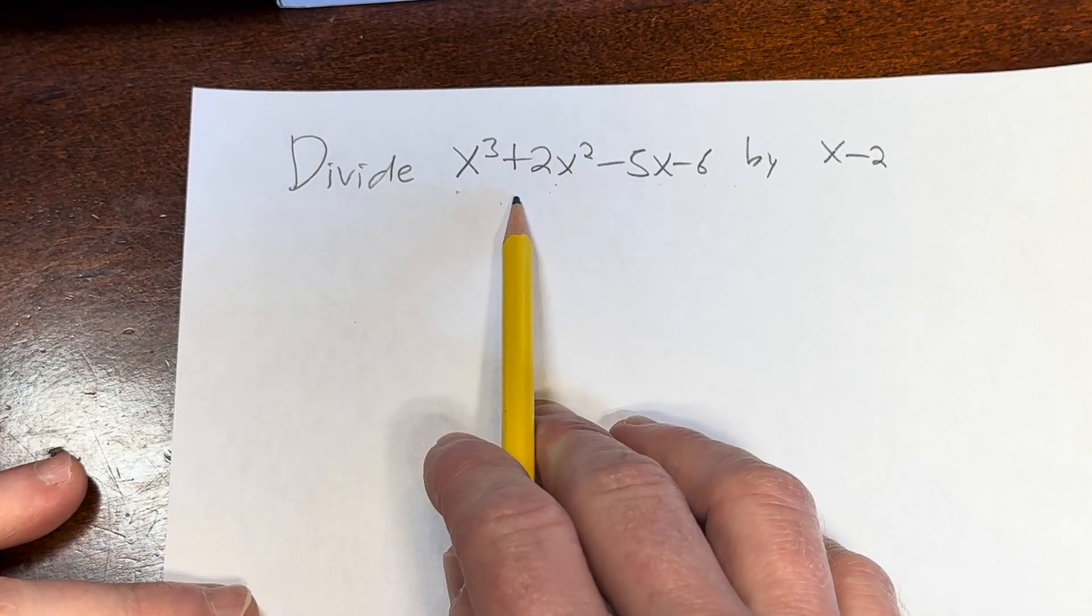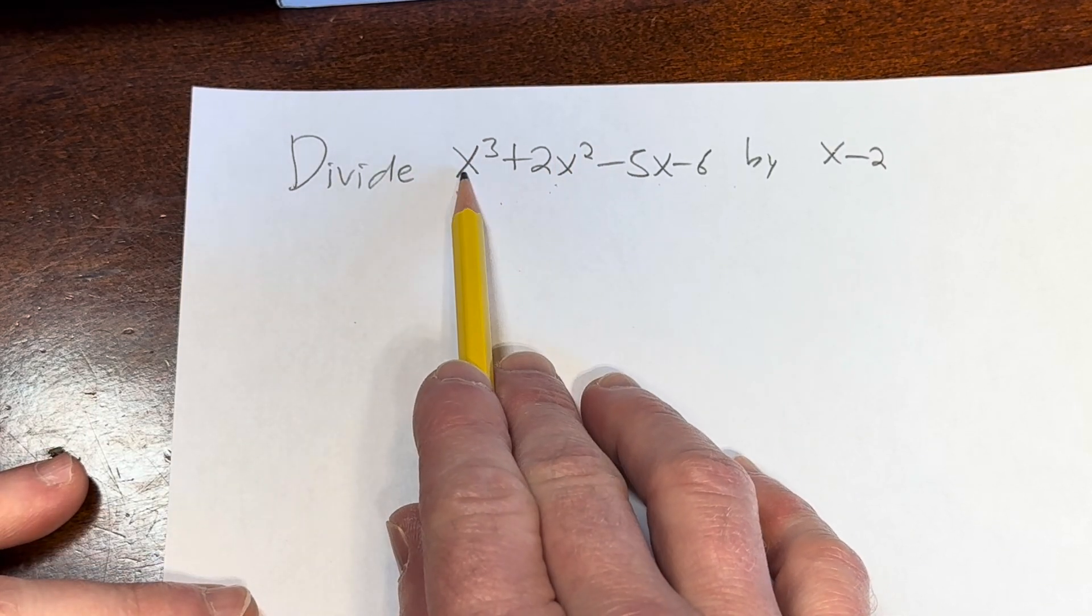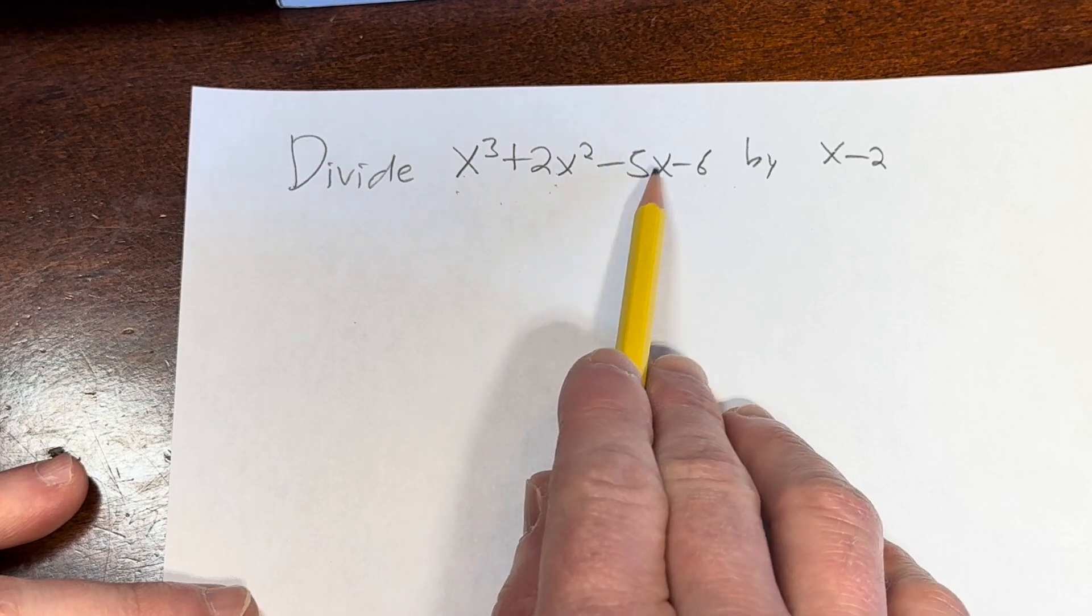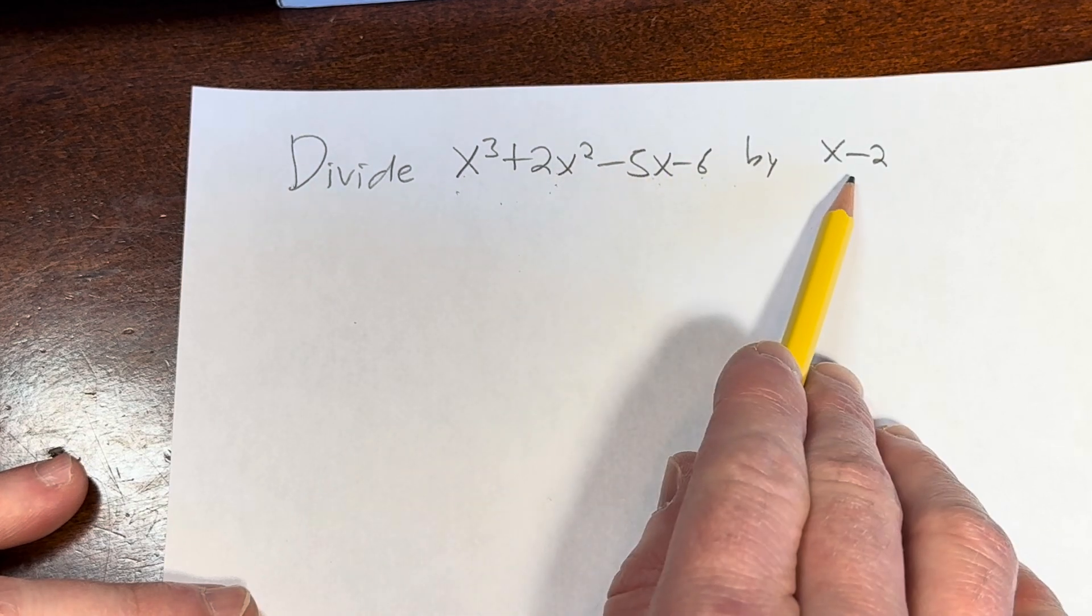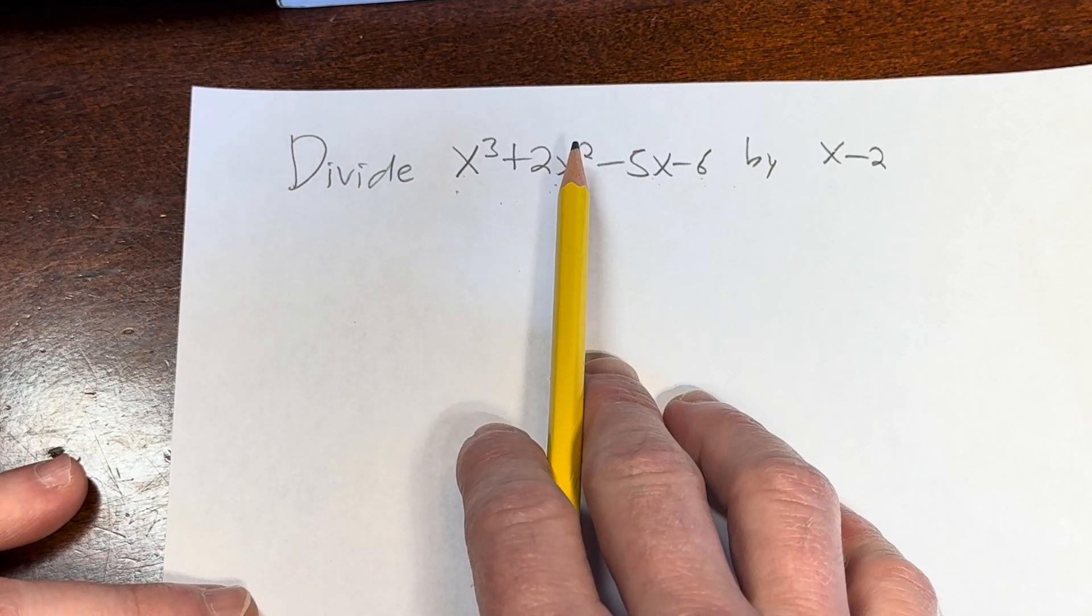All right, let's go ahead and do some synthetic division. We have x cubed plus 2x squared minus 5x minus 6, and we are going to divide this by x minus 2.